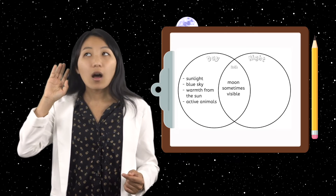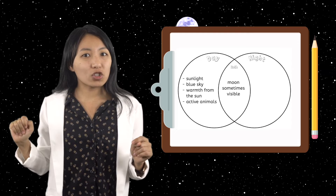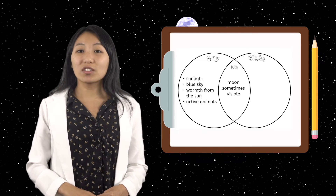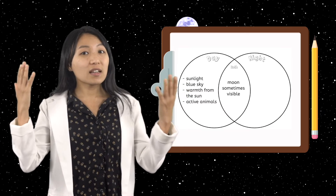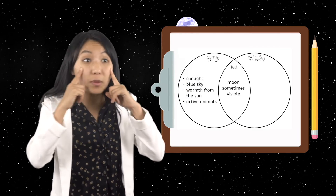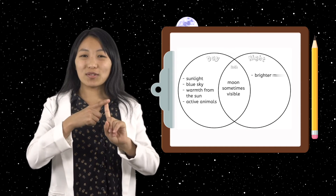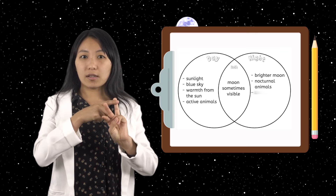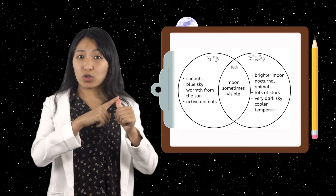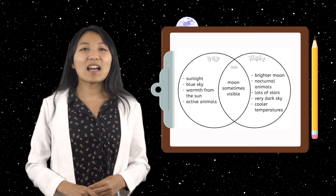Do you hear that? An owl! And lots of crickets too! There are certain animals called nocturnal animals that are awake during the night and asleep during the day. They even have night vision to help them see in the dark. Owls, bats, and raccoons are all nocturnal animals. I'm also observing that the air is much cooler without the sun in the sky. The temperature has definitely dropped down a few degrees since the sun has gone down. Let's write down our observations — remember to write these on the night side: brighter moon, nocturnal animals, lots of stars, very dark sky, cooler temperatures. Pause the video here to write down all of these observations.